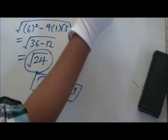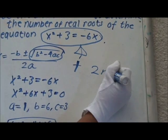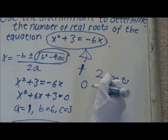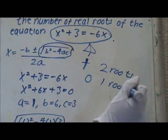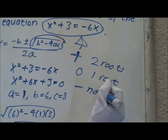When the discriminant is positive, that means you have two roots. When the discriminant is zero, that means you get one root. If the discriminant is negative, that means you get no roots.